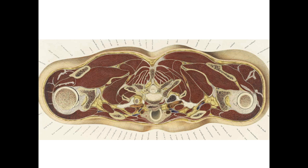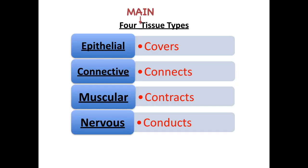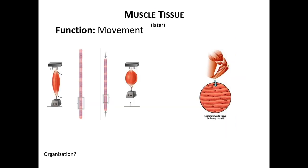So here are the four main tissue types, described simply with one word starting with C. The four main tissue types are epithelial, which covers things; connective tissue, which connects things; muscle tissue, which contracts; and the nervous system, which conducts electrical signals. The muscular and nervous are pretty straightforward to understand, and we'll talk about them in detail when we get to those systems.